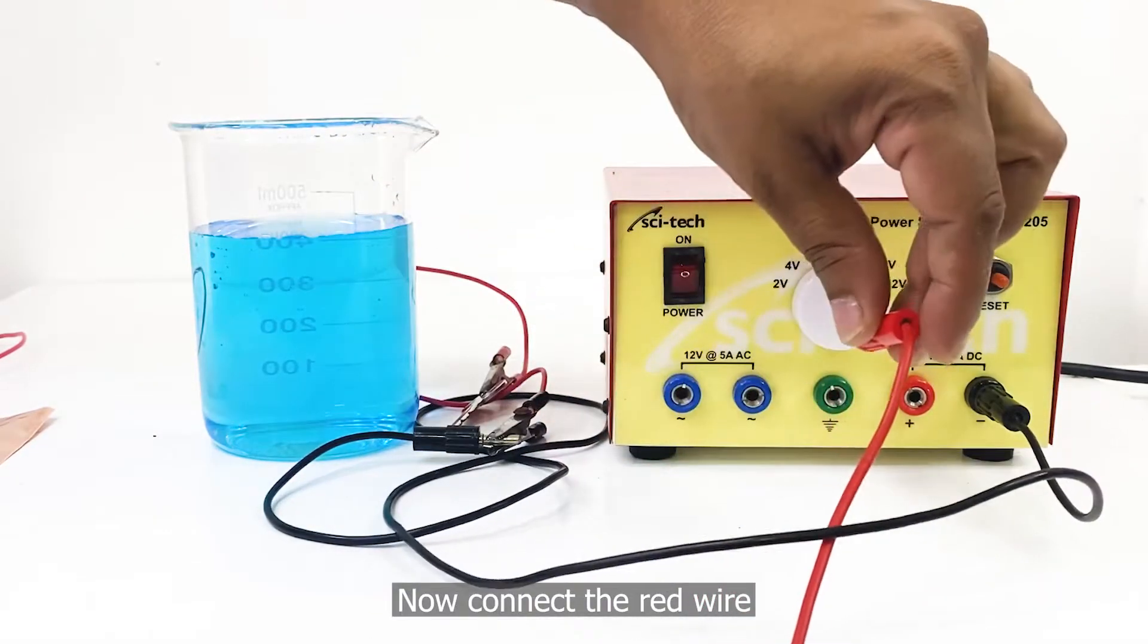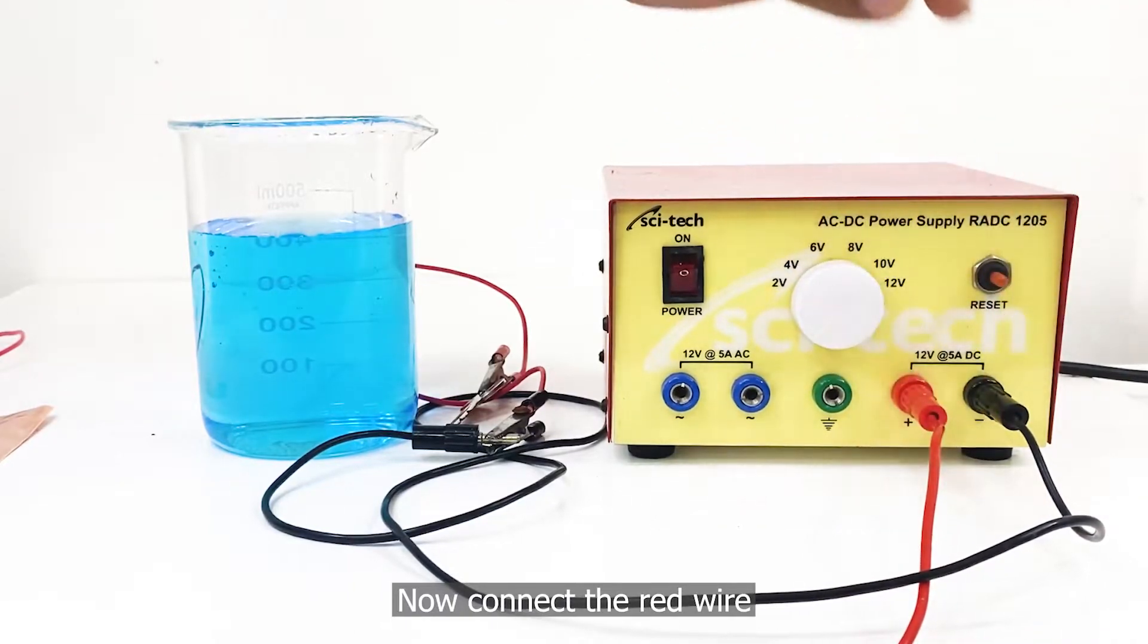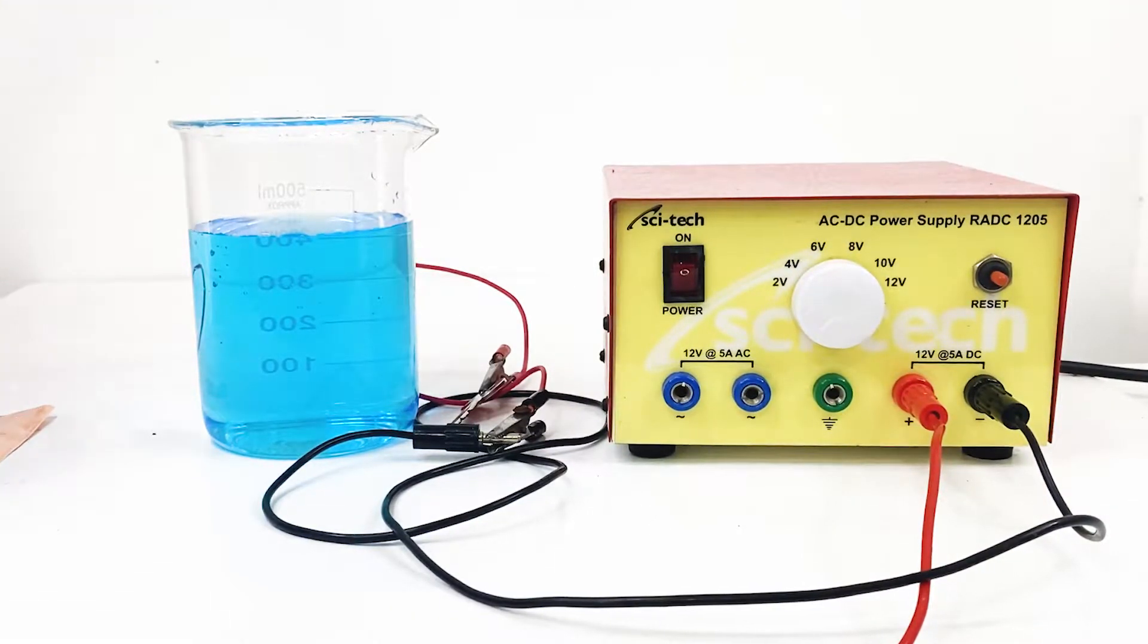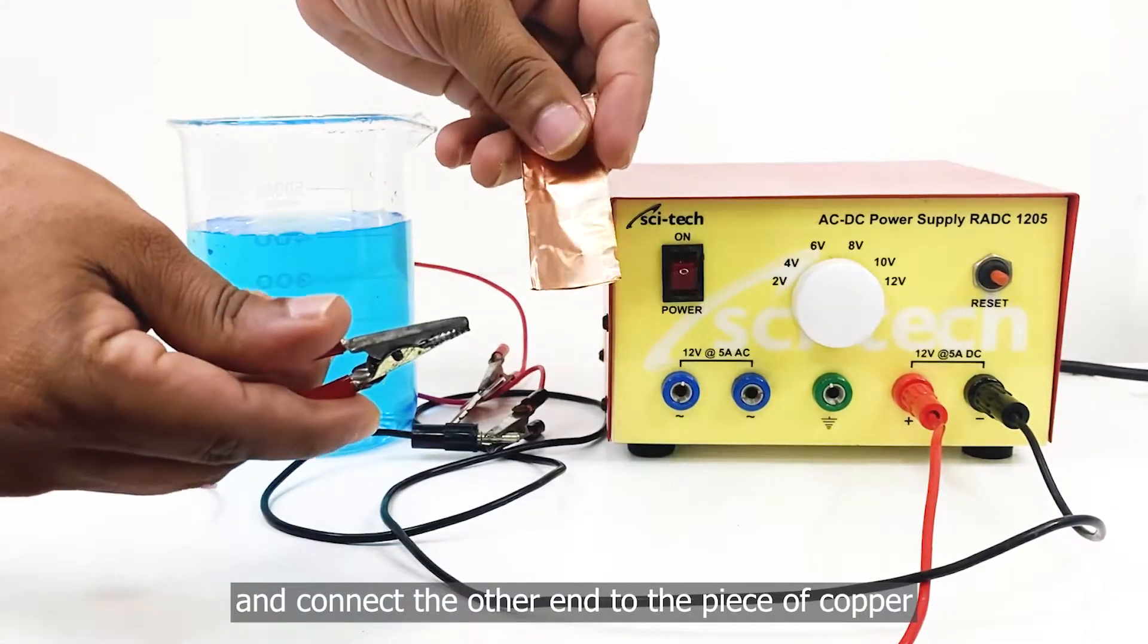Now connect the red wire and connect the other end to the piece of copper.